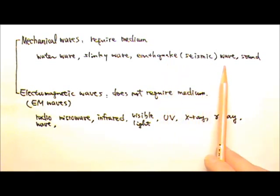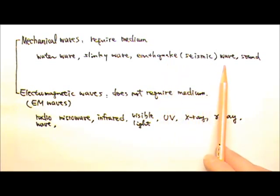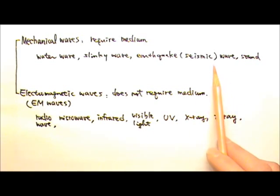Earthquake or seismic waves happen when earthquake, big explosion, or volcano eruption disturbs the earth and creates waves that travel through the earth.